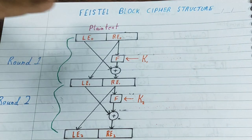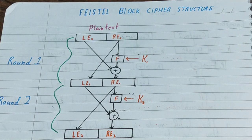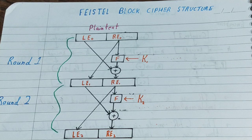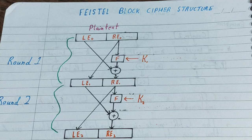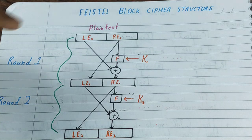One of them is Feistel block cipher structure. It is assumed that it is very tough, but it is actually very easy. Watch the video till the very end and I will guarantee that you'll understand it completely. So what we do in Feistel block cipher structure is we divide the plaintext into two halves.